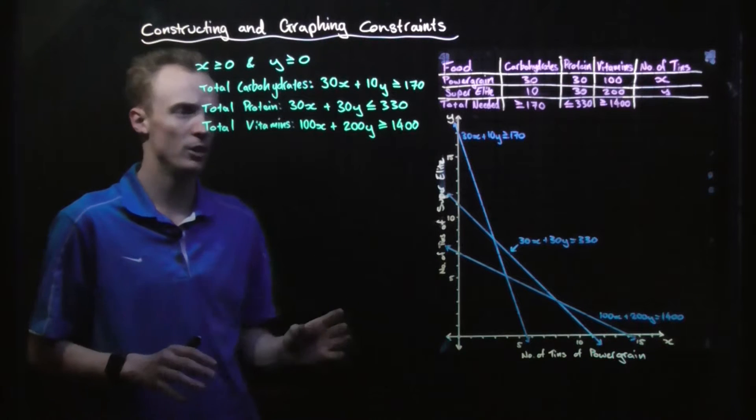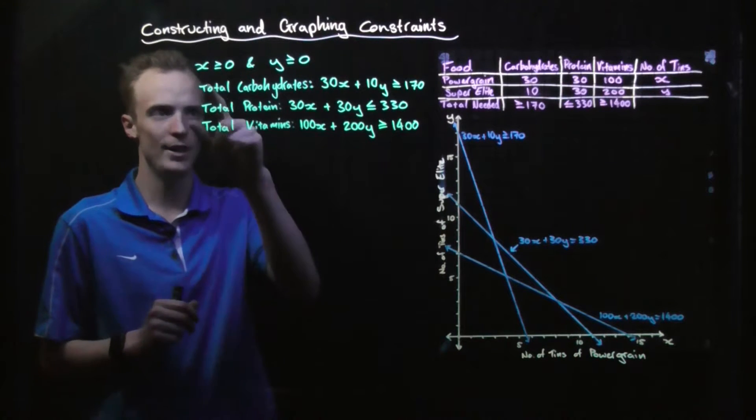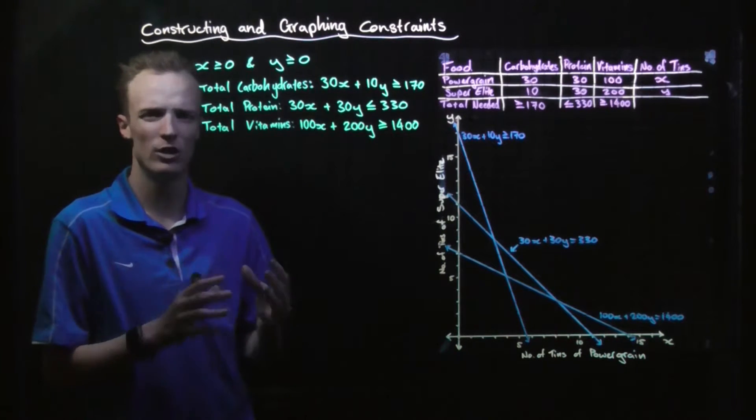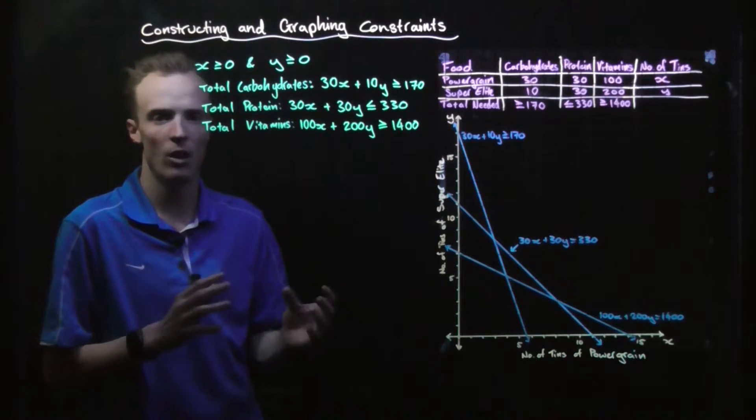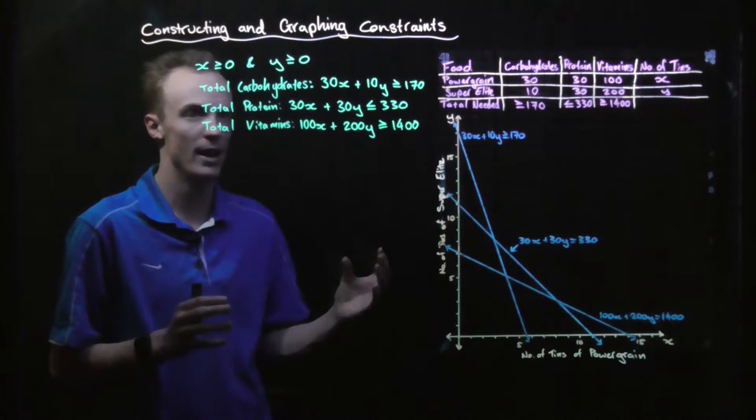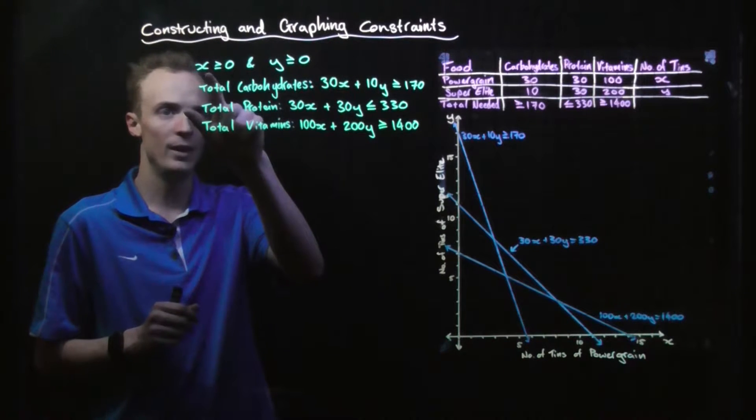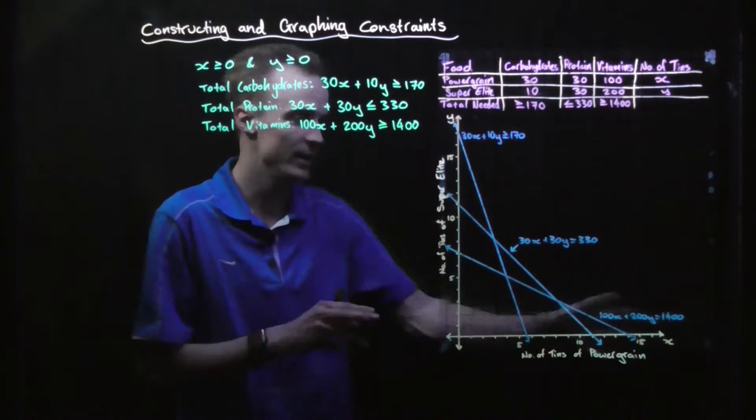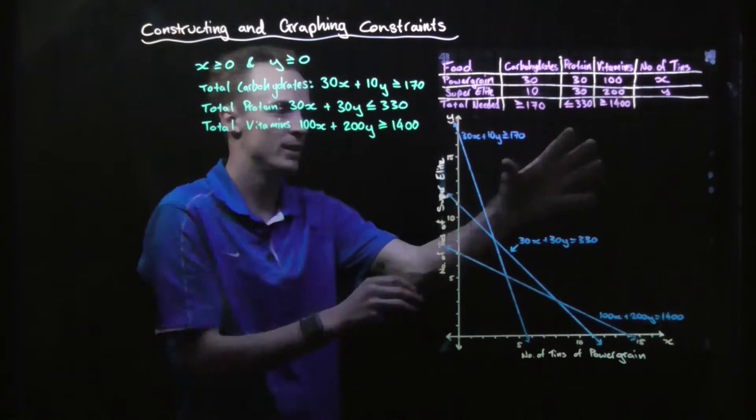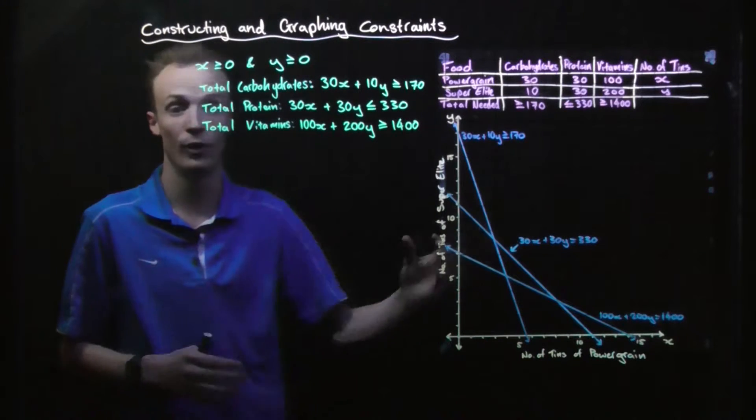So now what we do is we look at each boundary line individually, each constraint individually, and look at where the feasible region needs to lie in relation to that boundary. We know with x greater than zero and y greater than zero that those two boundaries mean it has to exist somewhere in this first quadrant.